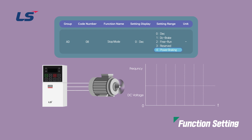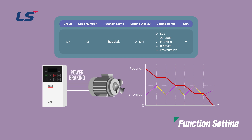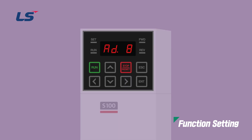The power braking stop method controls the deceleration gradient or re-acceleration to reduce the regenerative energy when the AC drive DC voltage rises above a certain level due to motor regenerative energy. It can be set when a short deceleration time is required without a separate braking resistor and braking unit. Note that the deceleration time may be longer than the set deceleration time, and when used for loads with frequent deceleration, burnout may occur due to motor overheating. To set it, in AD8 stop mode, press enter to display the screen, use the arrow keys to move to 4 power braking, and press enter to complete the setting.